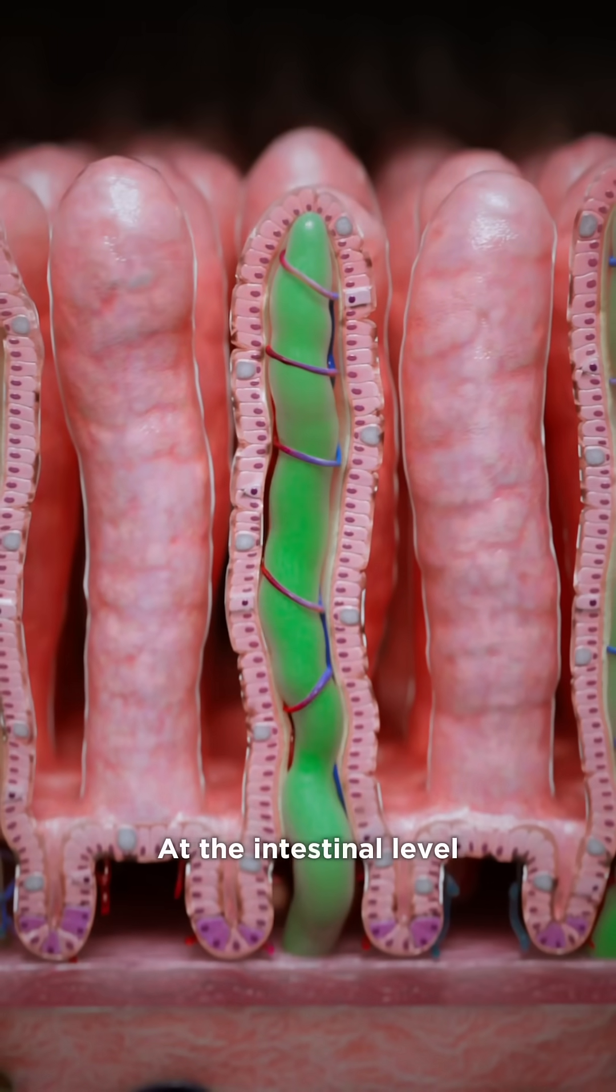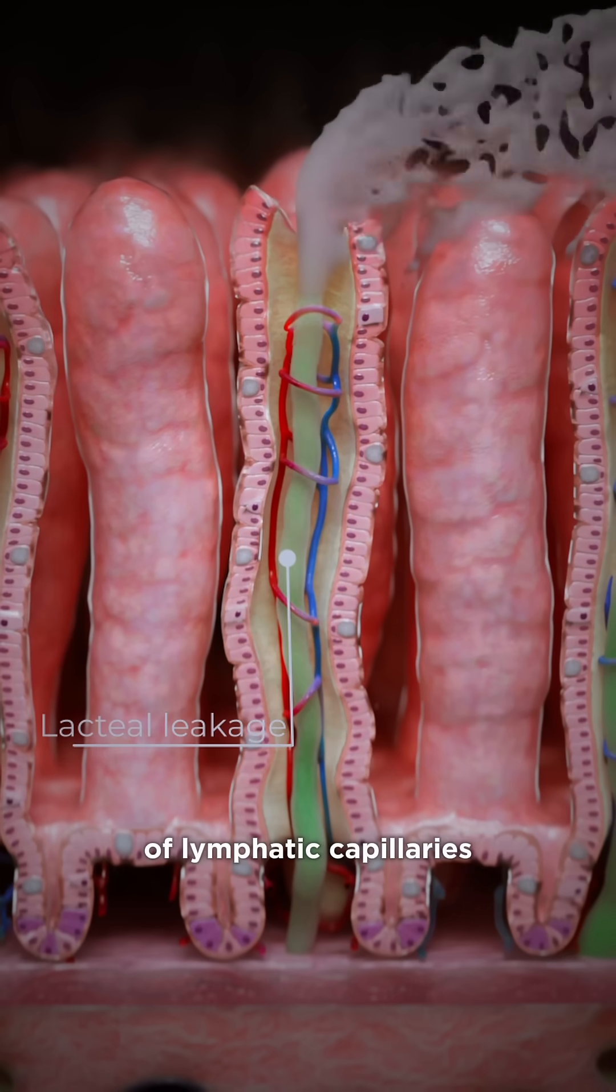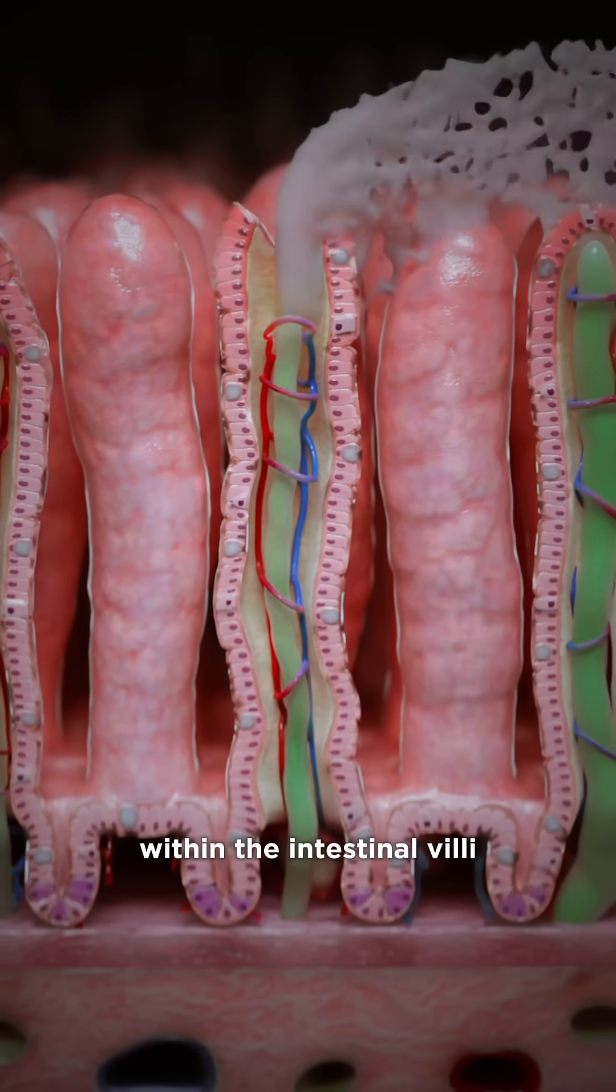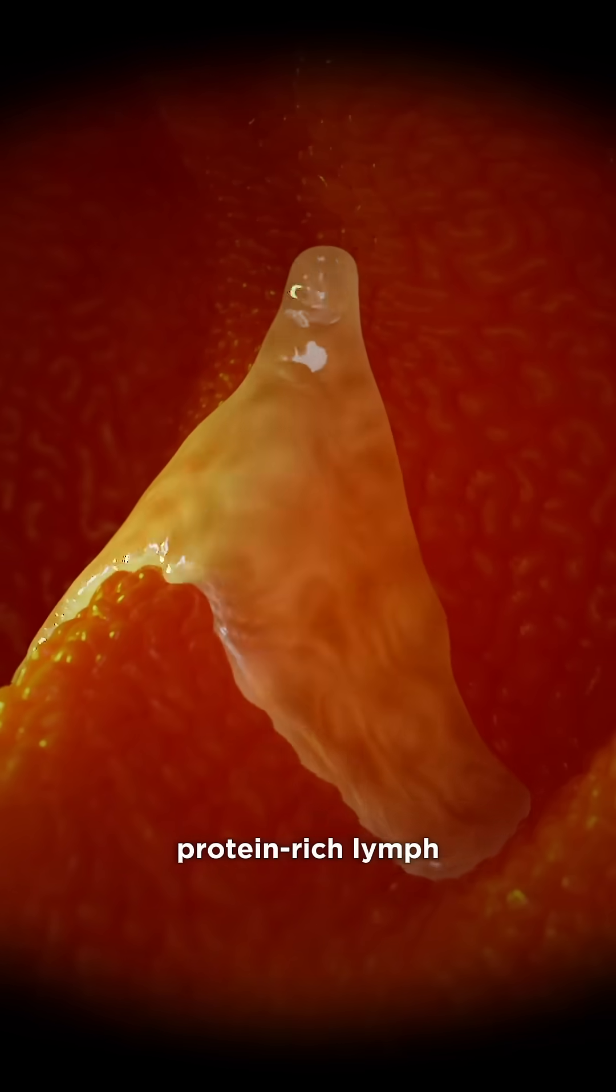At the intestinal level, these changes manifest as dilatation and thinning of the walls of lymphatic capillaries lacteals within the intestinal villi, ultimately resulting in structural compromise and leakage of protein-rich lymph into the intestinal lumen.